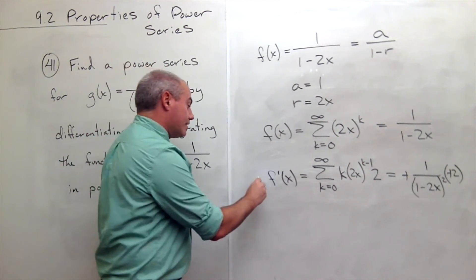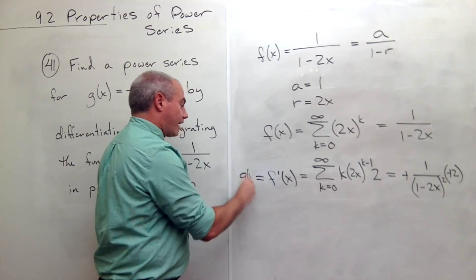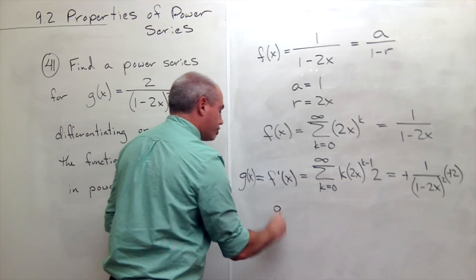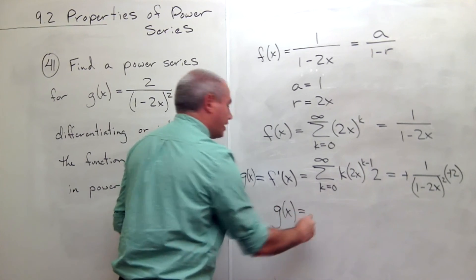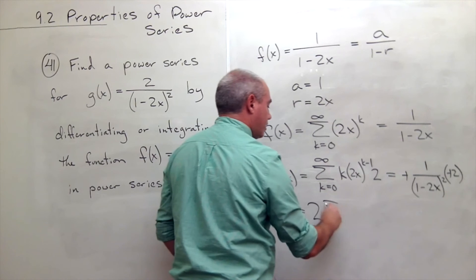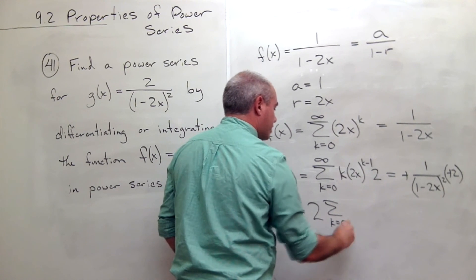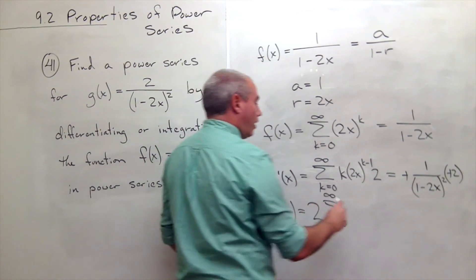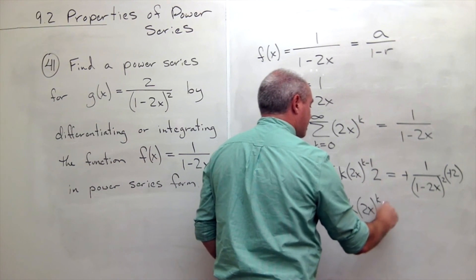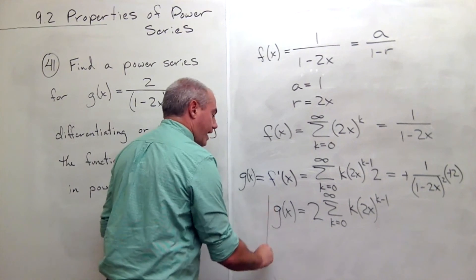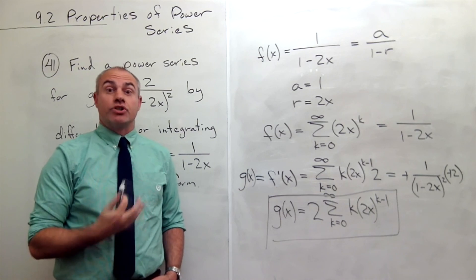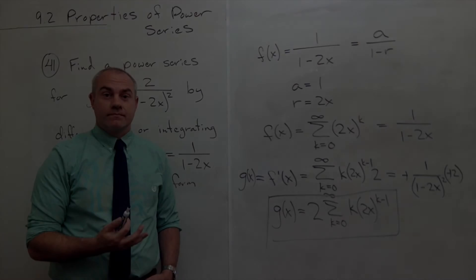So this is g(x). So if I want my power series expansion for g(x), then it's going to be 2. I can factor this 2 out of the sum times the sum k going from 0 to infinity of k times 2x to the k minus 1. And I have my power series expansion for g(x). Thanks for listening.